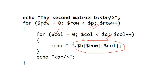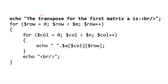For the transpose of matrix A, instead of storing the result we directly display it. In the echo statement, instead of accessing $A[$row][$col], we access $A[$col][$row] — swapping row and column indices. By definition, the transpose of a matrix is the interchange of row and column numbers of each element.